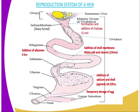After that, the yolk together with the albumen continues to move and goes to the third section, the isthmus. At the isthmus, shell membrane is added, and also water, salt and vitamins are added. At this point the yolk stays for 15 minutes, then proceeds to the uterus.